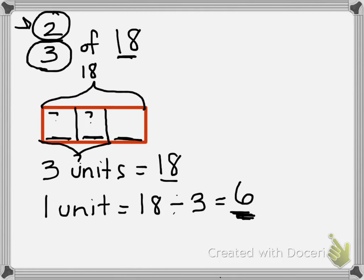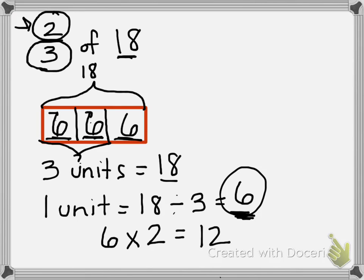But if we look back at our numerator, it's telling us we need to find the value of 2 units. So in order to do that, I'm going to take my value of my 1 unit, which is 6, and multiply it times 2, which will give me an answer of 12. So in order for me to see if that's right, I'm going to put 6 into each unit. Because again, 1 unit equals 6. But because I need to find the value of 2 units, 6 plus 6 does equal 12. So 2 thirds of 18 is 12.